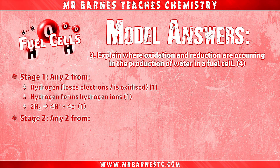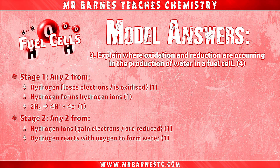For stage two, the next thing you say is that hydrogen ions then gain electrons or are reduced, for a mark. You can then say they react together with oxygen to form water for the second mark, and again you can put the ionic equation: 4H+ + 4e⁻ + O2 → 2H2O.